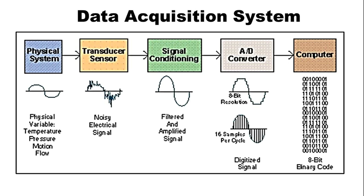The fourth block is analog to digital converter, A/D, which converts the signal driven by signal conditioning block into digital form, that is, into binary data.